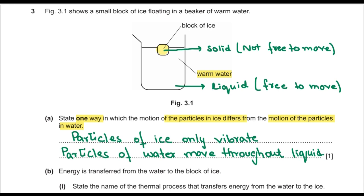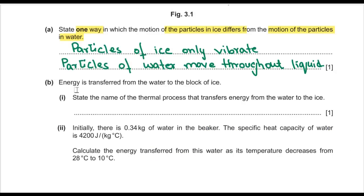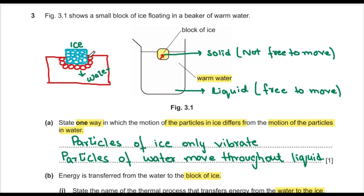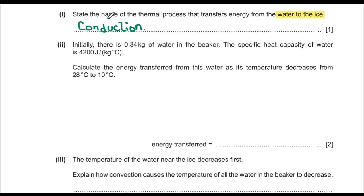Part B says energy is transferred from water to the block of ice. State the name of the thermal process. The liquid particles cannot enter the ice but they pass on their vibrations to it. Passing on vibrations is known as conduction, so the answer is conduction.